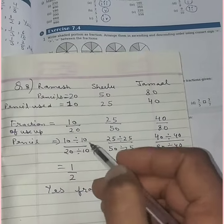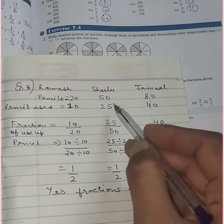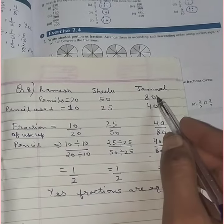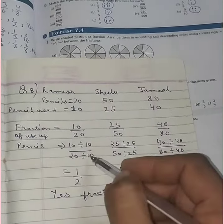So, Silu used 25 pencils out of 50, Jamal used 40 pencils out of 80. Now,